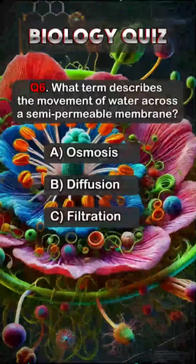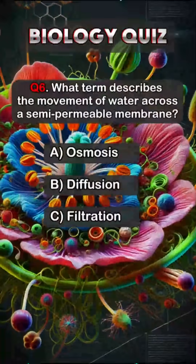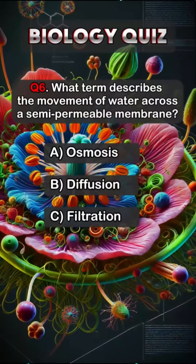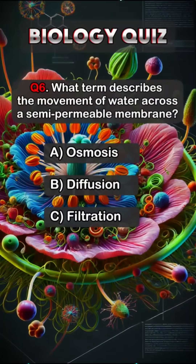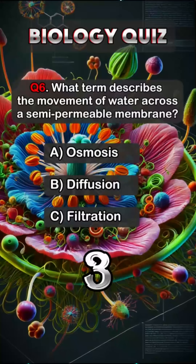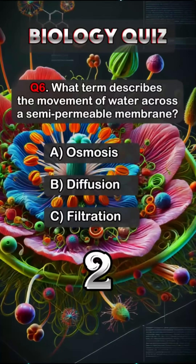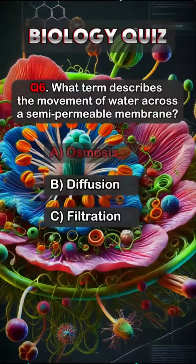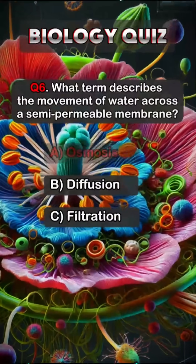Question 6. What term describes the movement of water across a semi-permeable membrane? Answer A. Osmosis.